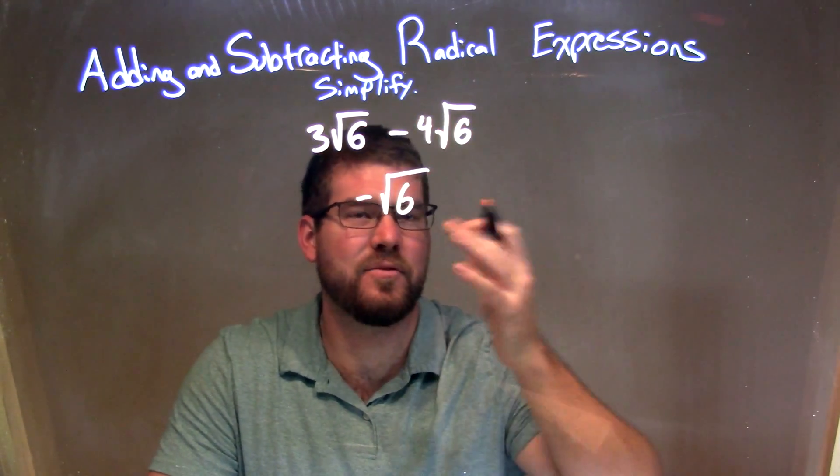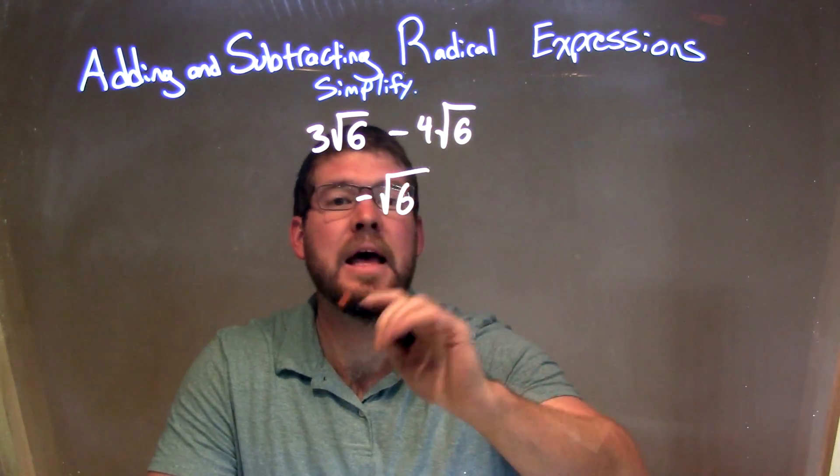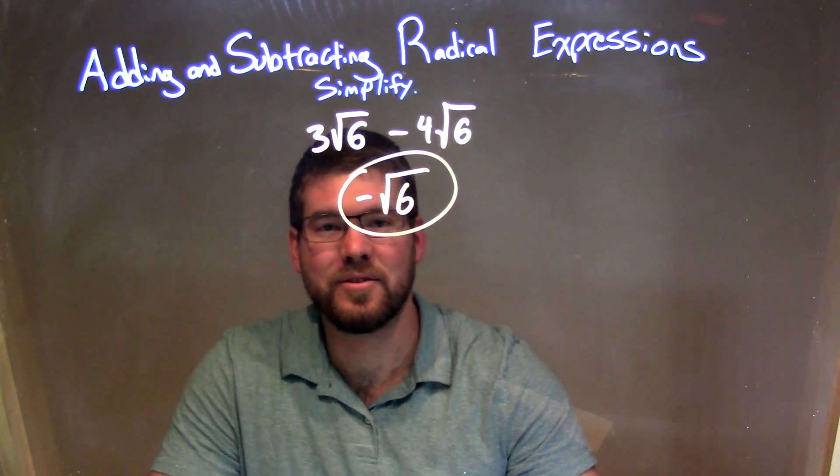So 3 times the square root of 6 minus 4 square root of 6 is just negative square root of 6. That's it.